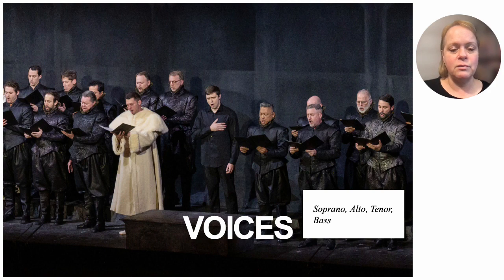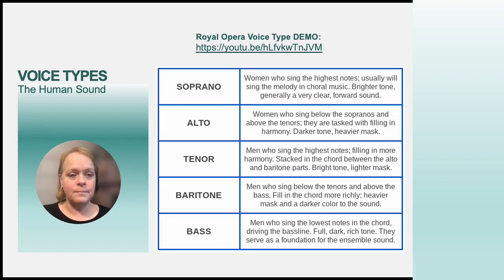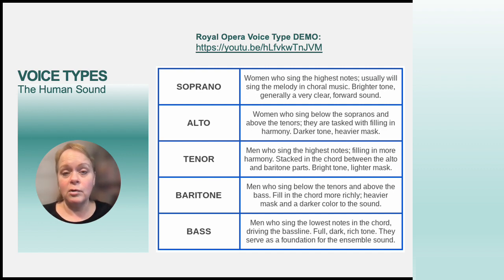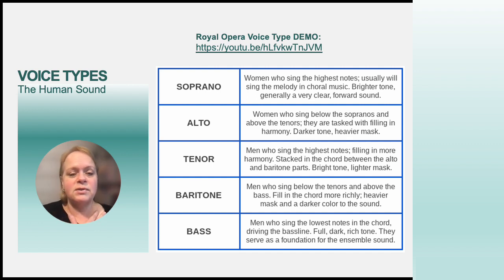There are four major voice categories: soprano, alto, tenor, and bass, with some intermediate categories as well. Soprano is generally sung by women who sing the highest notes — usually the melody in choral music, with a bright, clear, forward sound. Alto is also usually sung by women, below sopranos and above tenors. My voice is an alto voice. Altos fill in the harmony with a darker tone and heavier mask.